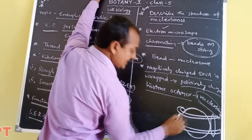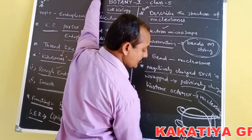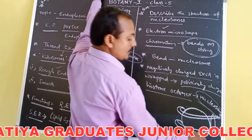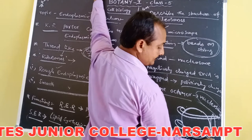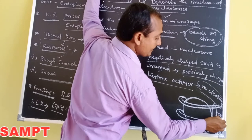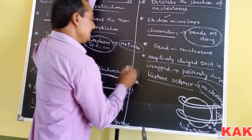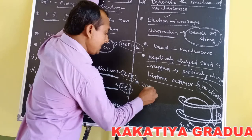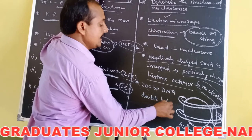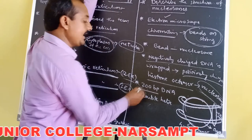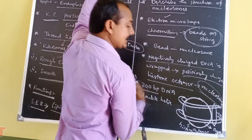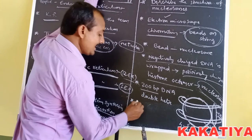The round-shaped structure is called the histone octamer, made of histone proteins, and they are surrounded by double-stranded DNA. There is also the H1 protein. A typical nucleosome contains 200 base pairs of DNA double helix, wrapped around the histone core or histone octamer.